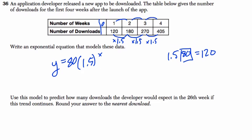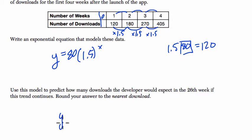Use this model to predict what the developer would expect on the 26th week. In my case, x is the number of weeks, so it's 80 times 1.5 to the 26th week. If you calculate this, you get a big number: 3,030,140.